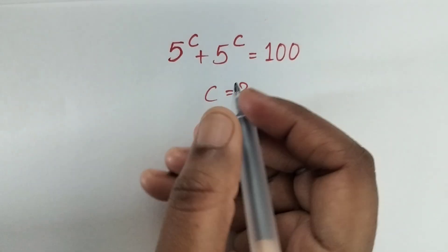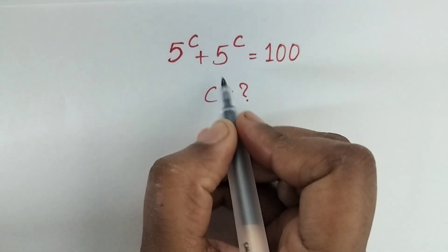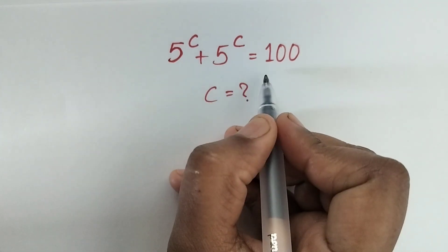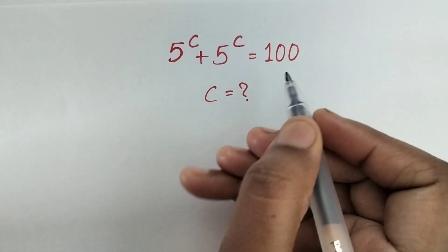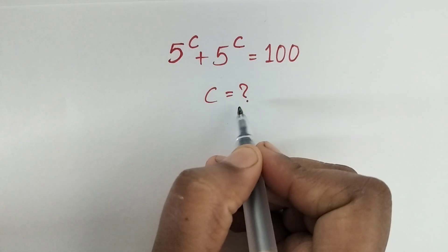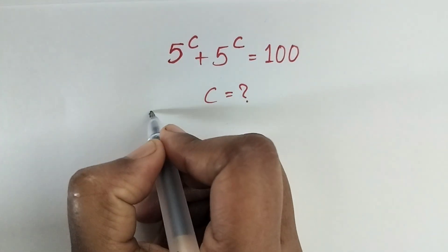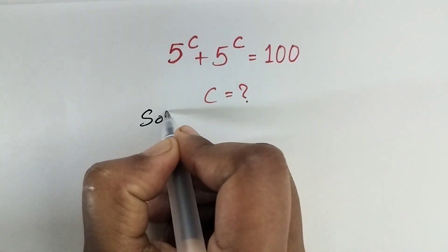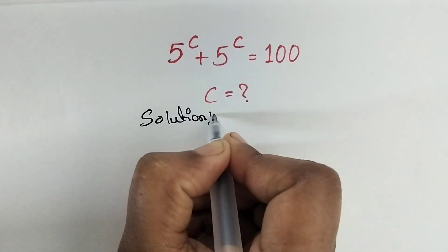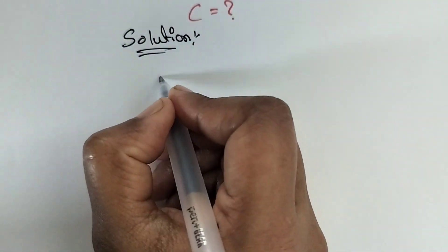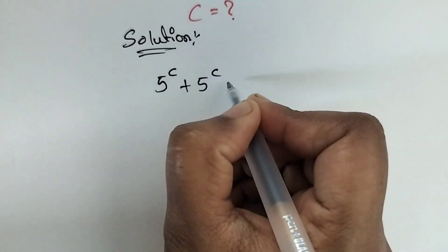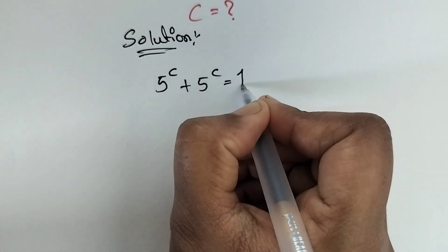Hello everyone, welcome back to our channel. Here we have a problem: 5 to the power c plus 5 to the power c is equal to 100. In this problem we need to find the value of c.